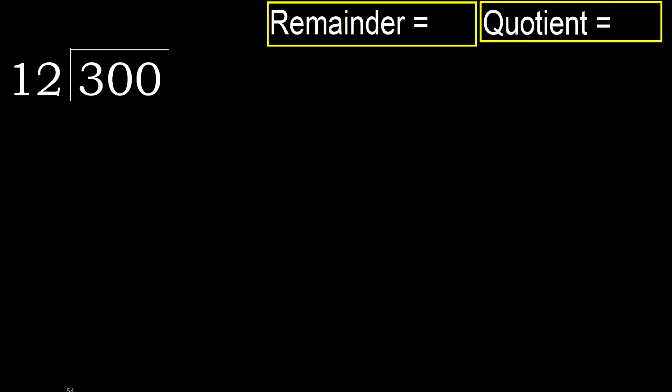300 divided by 12. 3 is less, therefore next. 30 is not less, therefore work with 30.